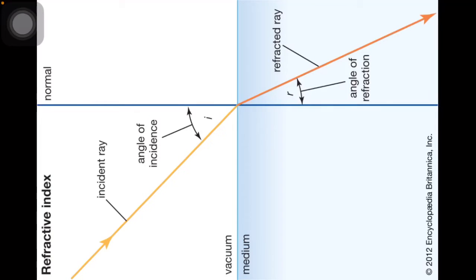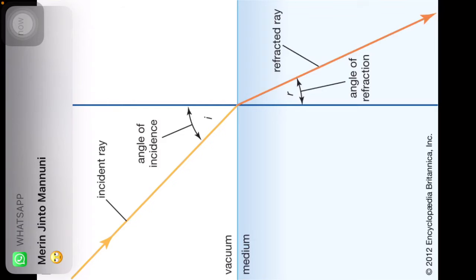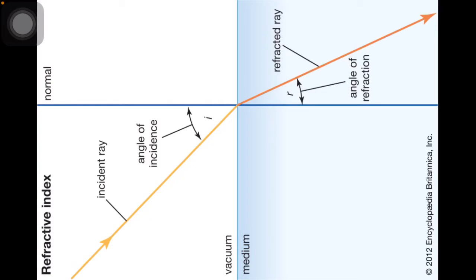That's why refraction occurs. For example, if you look at the figures: the first medium can be vacuum or air, and the second medium can be glass, solid, or liquid. These represent different media separated by a boundary.